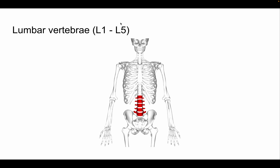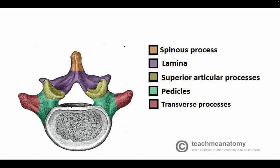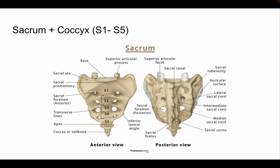Lumbar vertebrae, L1 through L5, are arguably the simplest vertebrae because they don't have anything particularly special about them. We have the spinous process, superior articulating facets, and the facets themselves. We have the pedicles and the transverse processes. Importantly, lumbar vertebrae do not have transverse costal facets or superior demi facets, because they don't articulate with the ribs. We also have the lamina here, which is present on most vertebrae.